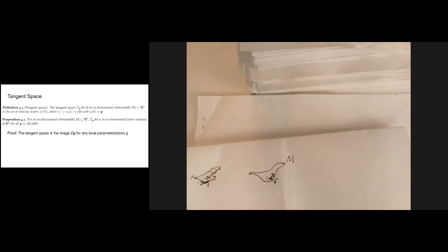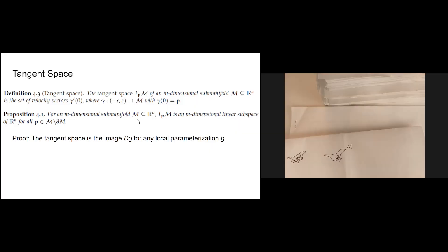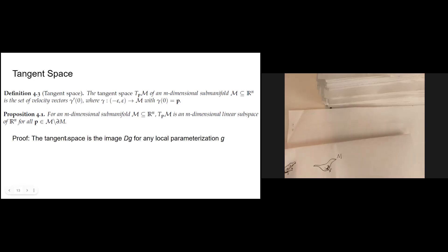The set of all those tangent vectors forms our tangent space. There's a simple proposition: for an m-dimensional submanifold, the tangent space is an m-dimensional linear subspace for all p on M, except for the points on the boundary. We can prove this quickly.